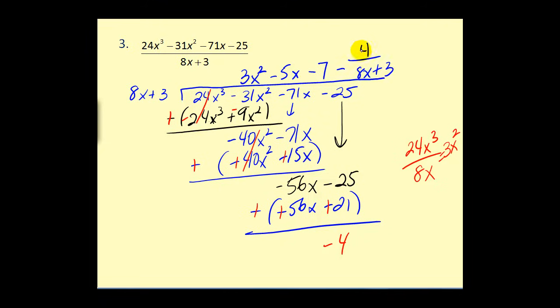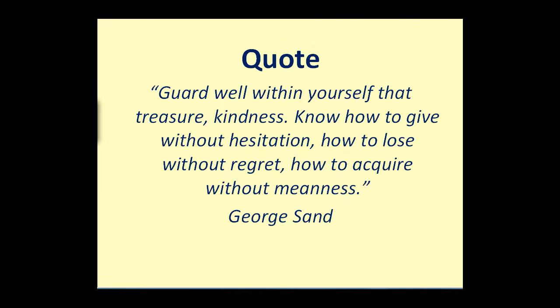So we write our final quotient as this trinomial minus 4 over the divisor of 8x plus 3. Note that the 4 and the 8 do not simplify. This is our final quotient. I hope you found this video helpful — thank you and have a good day.